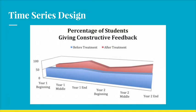In time series design, one group is used to complete the research. Testing is done multiple times in succession to collect data before and after implementation of the treatment. Time series design helps to show a significant change. This data from our original research question shows how a time series design collects data over a long period of time. The section in blue shows the data collected before the treatment, which stays mostly consistent over two years. The data in red shows the change after the treatment — we can see an increase every year in student ability to give constructive feedback.